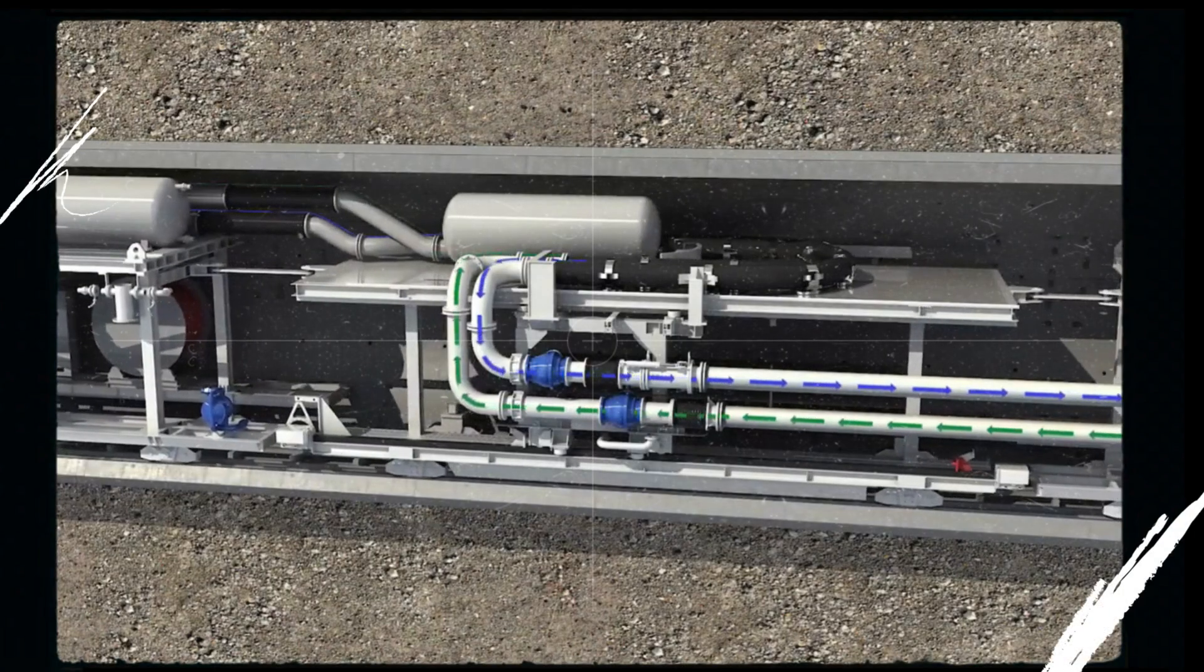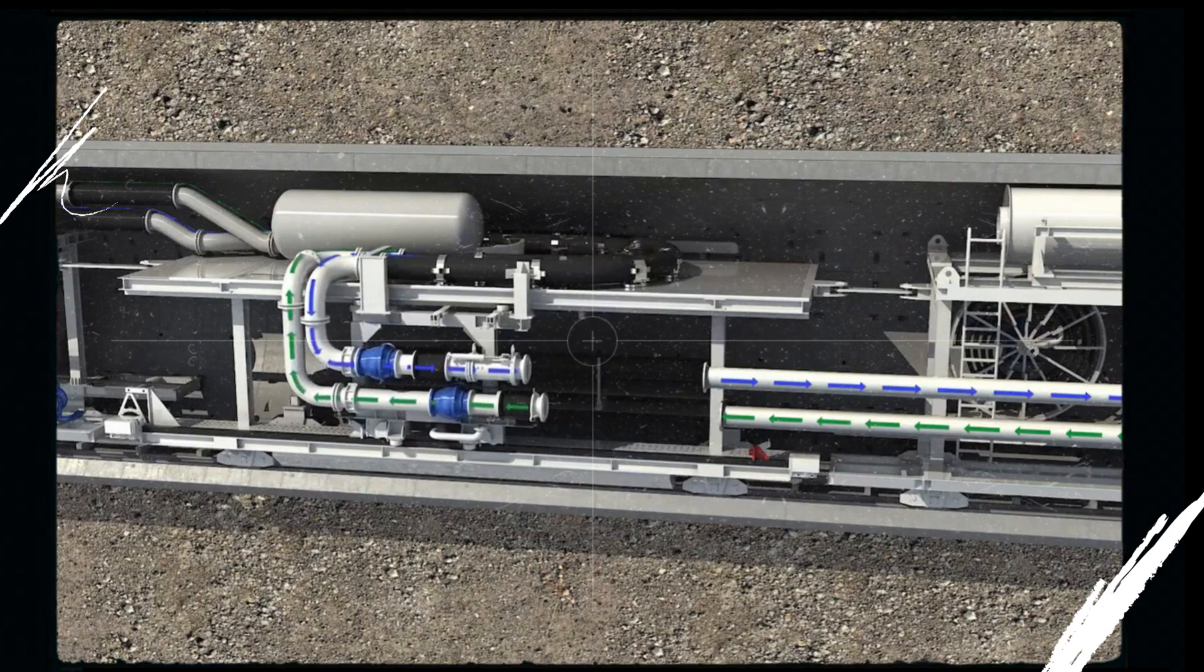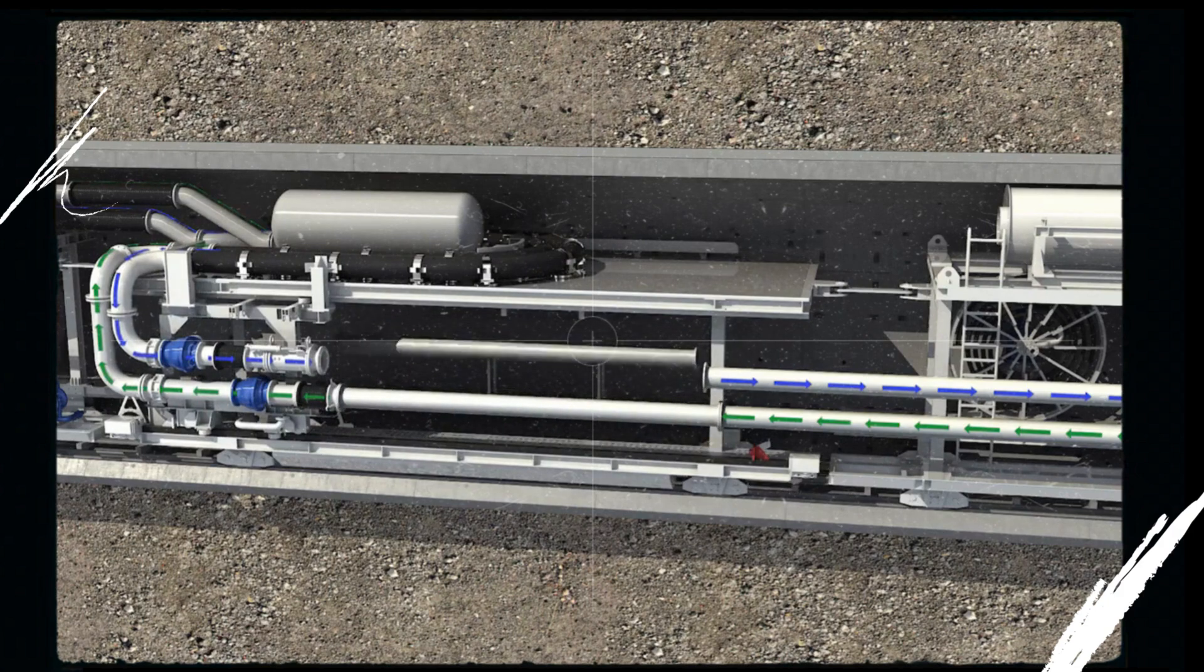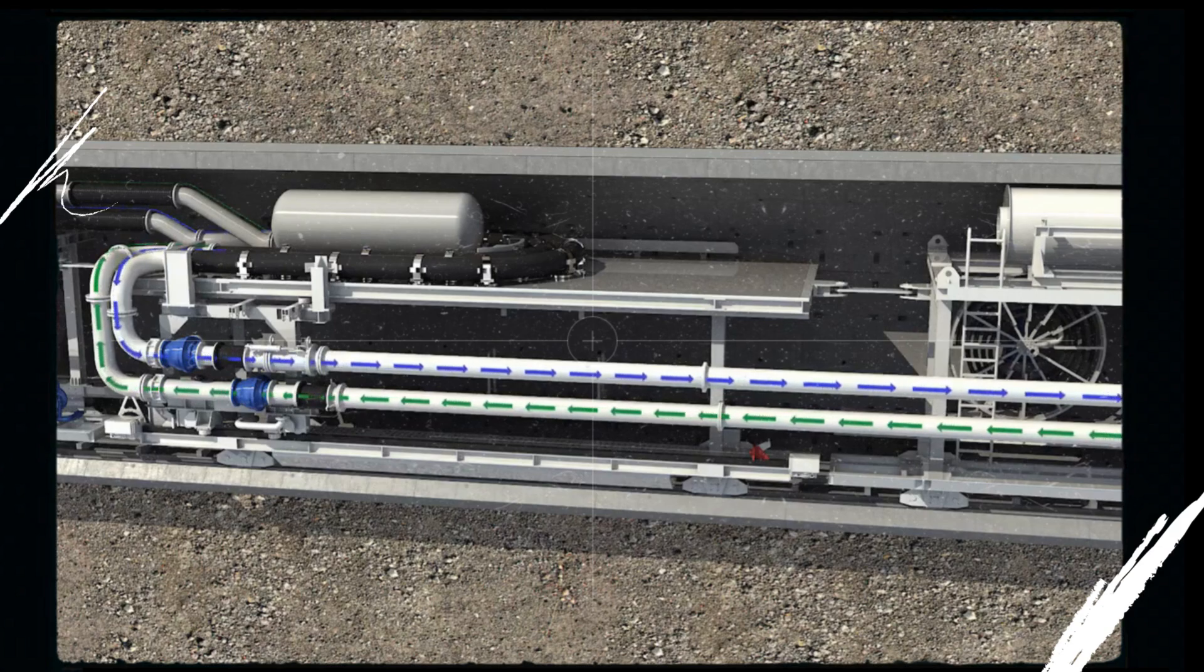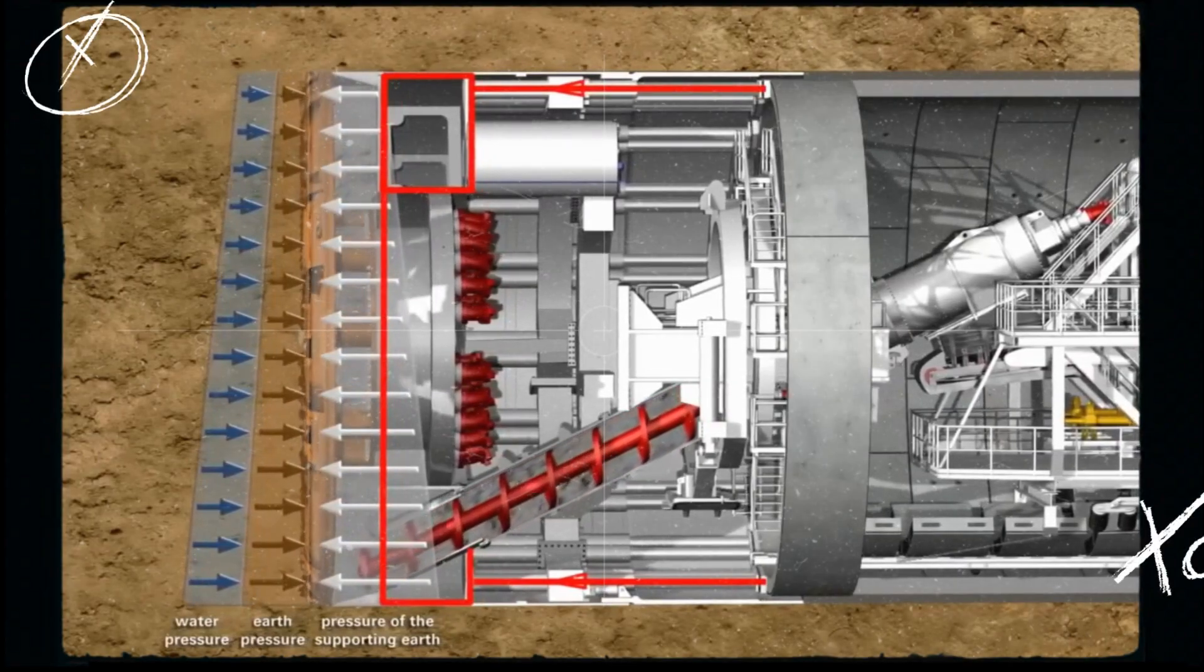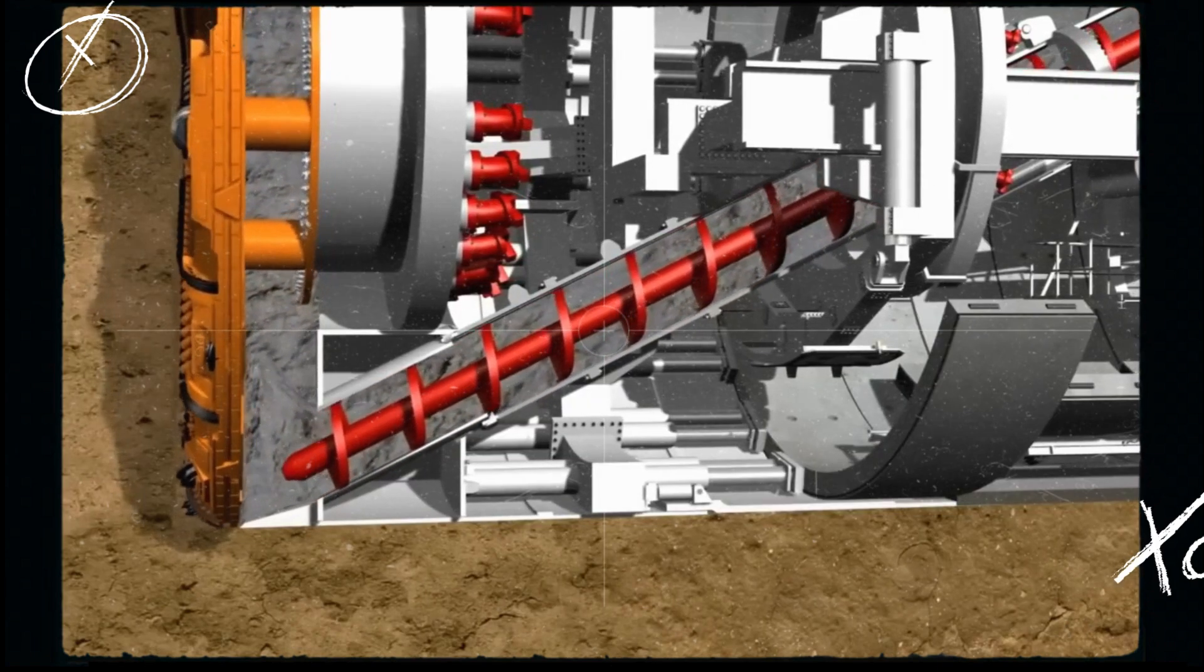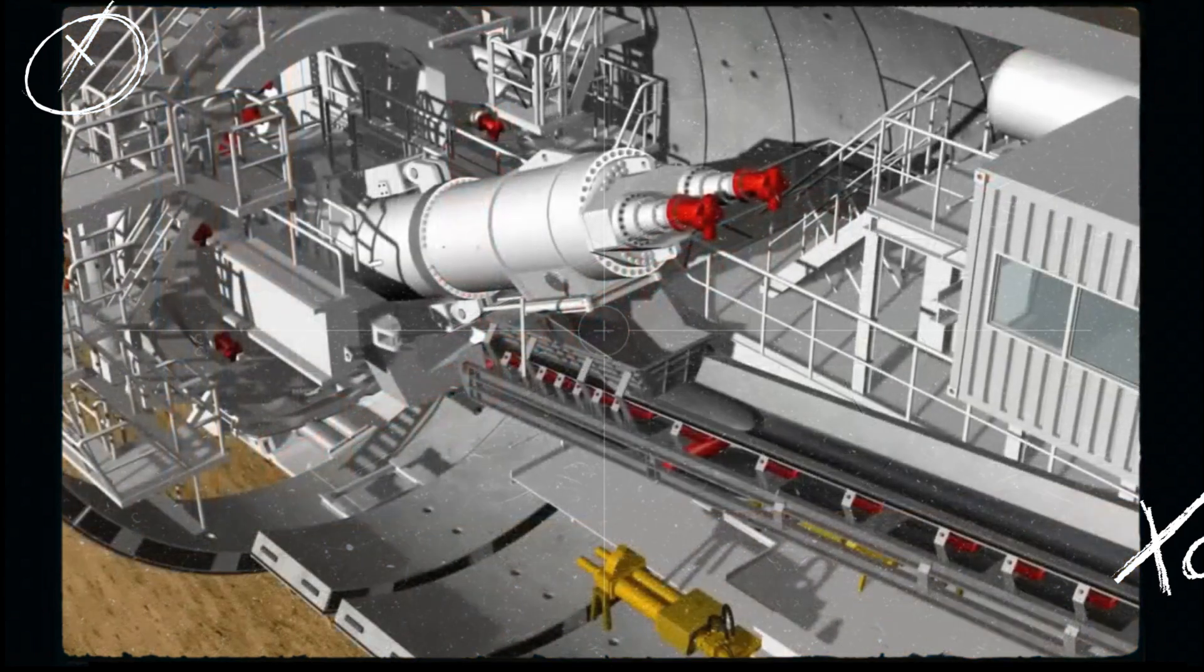The machine also features real-time monitoring systems to adjust the operation based on ground conditions, ensuring optimal performance and safety. With its ability to adapt to different soil types and automatically manage excavation and tunnel support, the Herenknecht TBM is a crucial tool for large-scale infrastructure projects, such as metro stations, highways, and underground utilities.